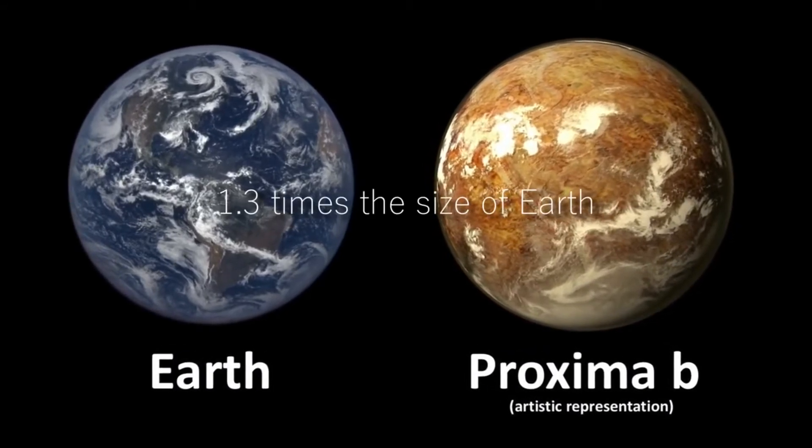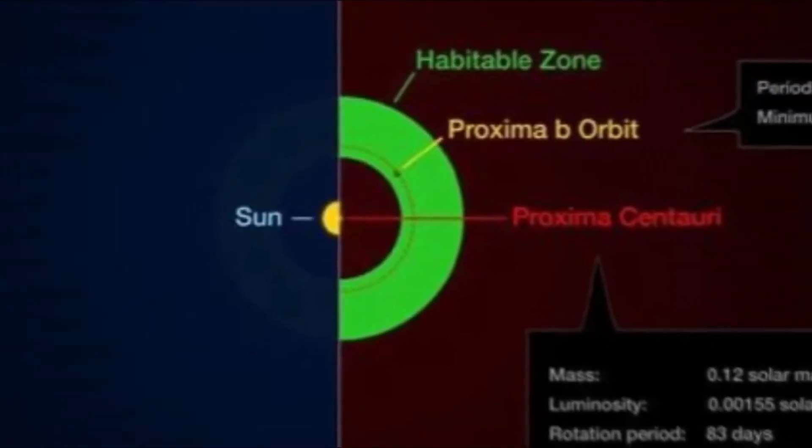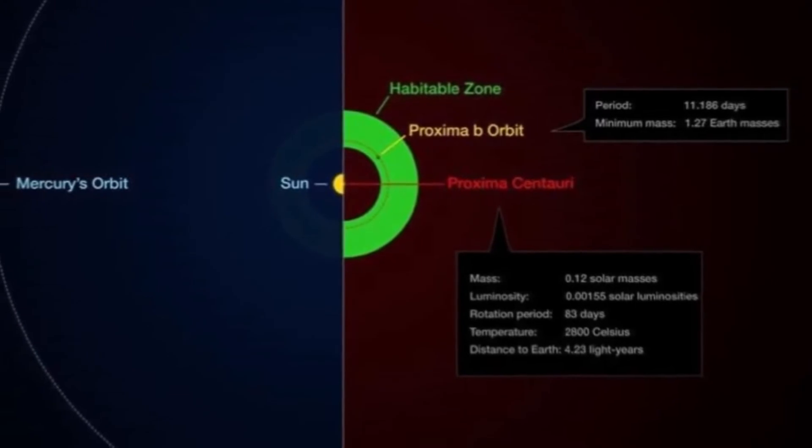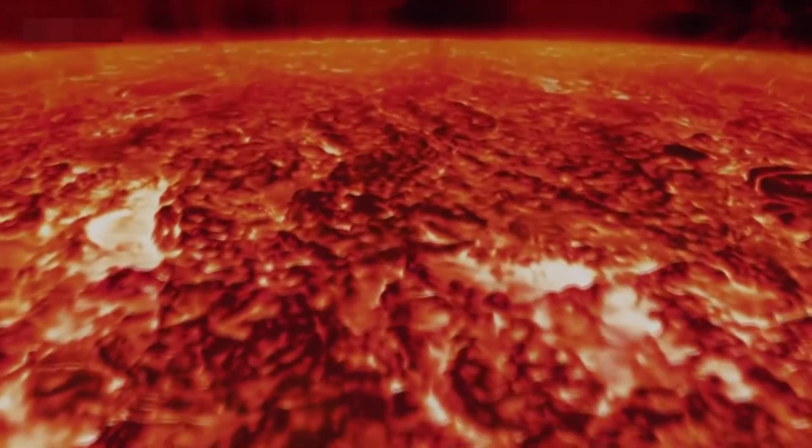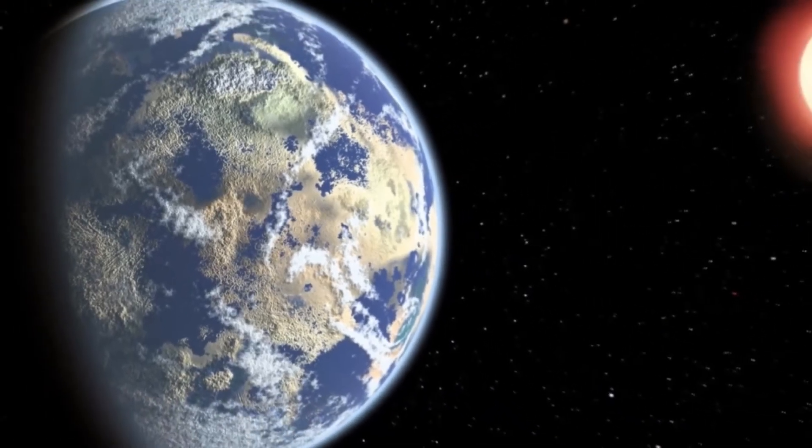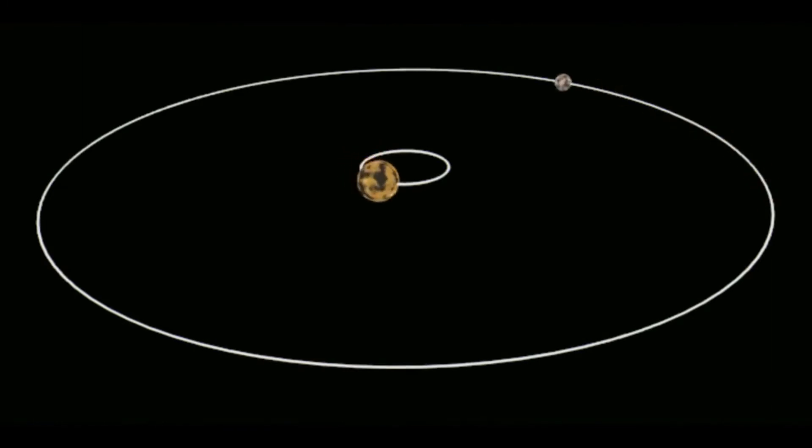Interestingly, Proxima Centauri b receives roughly the same amount of solar energy as Earth. Astronomers have discovered an increasing number of Earth-sized exoplanets orbiting distant stars in the habitable zones of their stars. But Proxima Centauri b is particularly intriguing because it orbits the Sun's nearest star, only 4.2 light-years away. Its confirmation underscores current findings that such worlds are common in our galaxy.